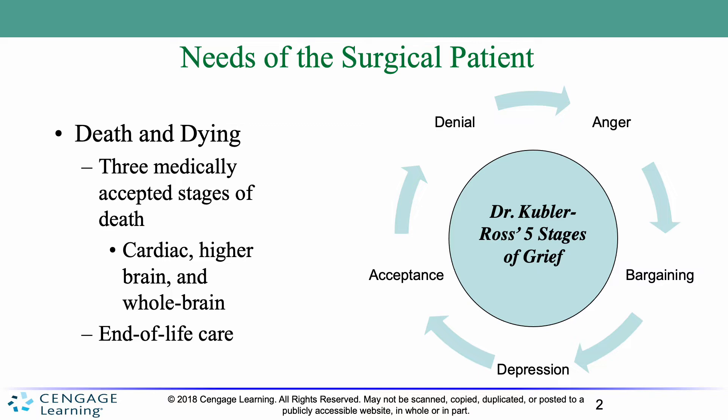Anger is where denial is replaced by feelings of rage, anger, envy, resentment, and so on. A question a person might ask in the anger stage could be, 'Why is this happening to me?' Bargaining is where the individual tries to postpone the inevitable, even if just in their mind. A statement might be, 'Just let me live long enough to see my son graduate.'